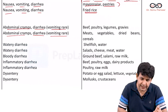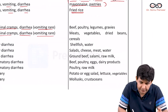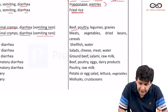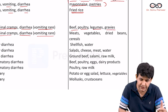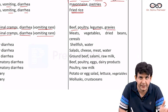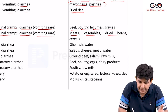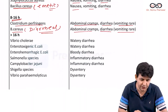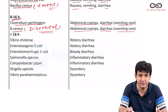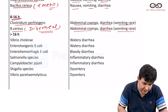For 8 to 16 hours, after eating beef, poultry products, legumes, and gravies — that is for Clostridium perfringens. For Bacillus cereus diarrheal type, it is meat, vegetables, dried beans, and cereals. So these two organisms should come to mind immediately for 8 to 16 hours.